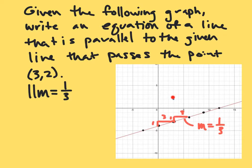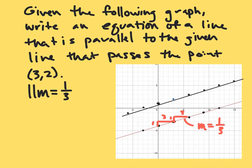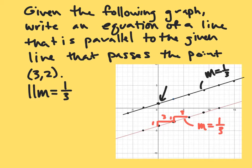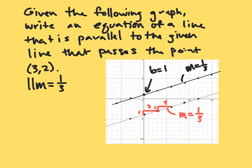We can use the graph to generate more points on this parallel line. Going down one to the left three, plotting a point and continuing that trend, we can generate the graph of this line. This equation has a slope of one third and a y-intercept of positive one, so the equation of this line is y equals one third x plus one.